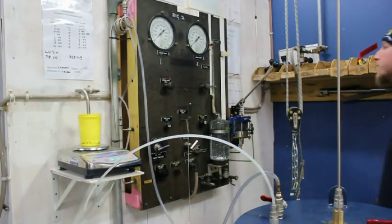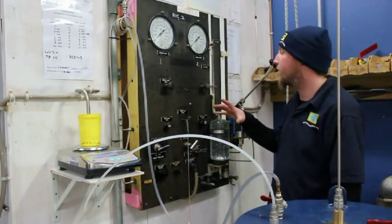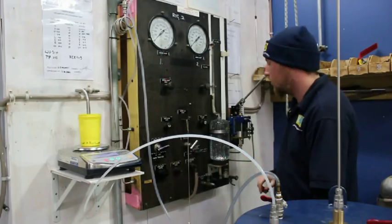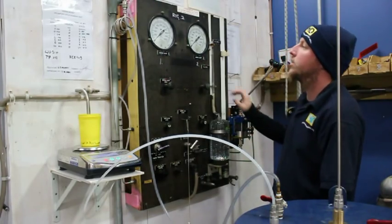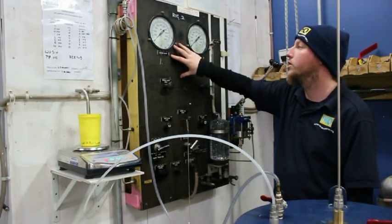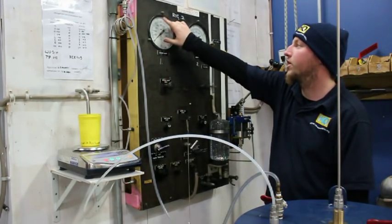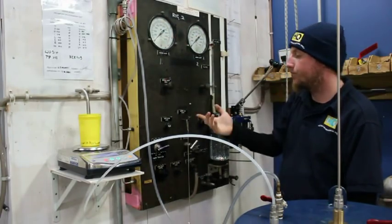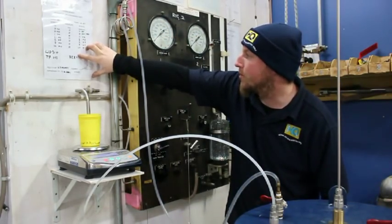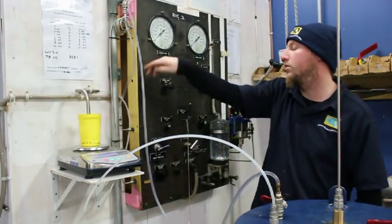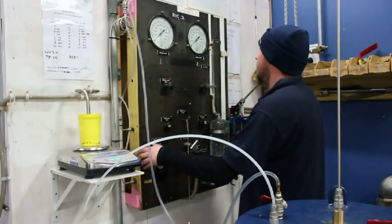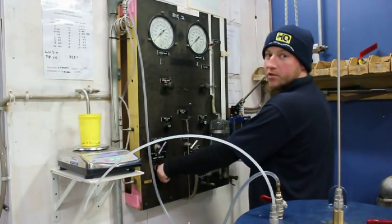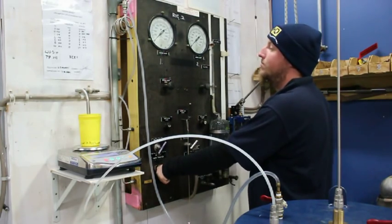So the first thing we've got to do when we run the test is our burette here needs to be zeroed, which I've already done. So what we're going to do is we're going to do a rig check. We're just going to make sure that we've got no leaks. Now, when we do this, we're only going to go up to working pressure, which in this particular case is 310 bar. Now, on the wall here, I usually write the results. So I'll close that off. And just bear with me for the noise again. And we'll run this up to 310.